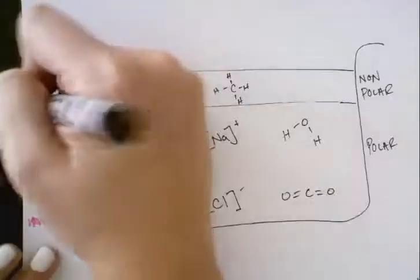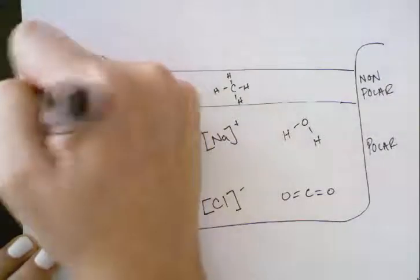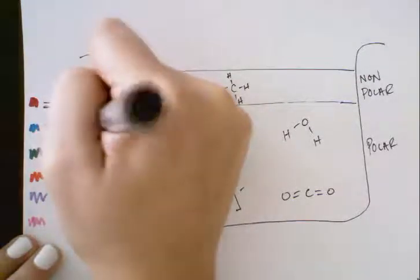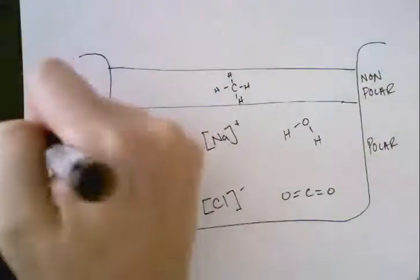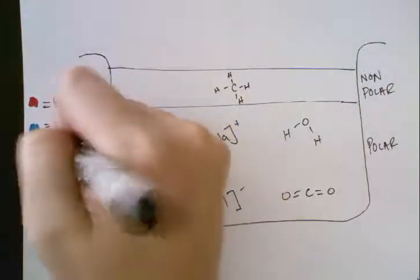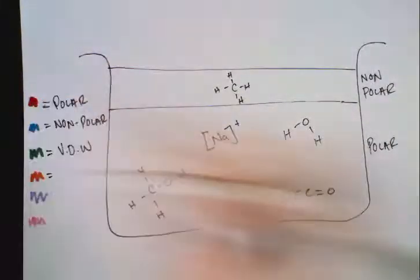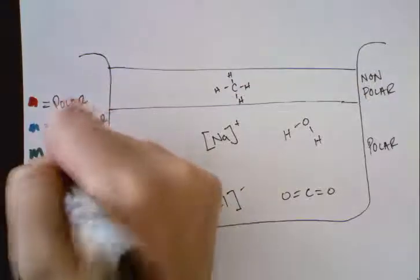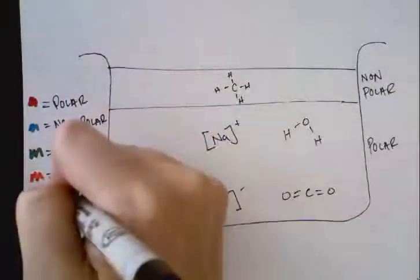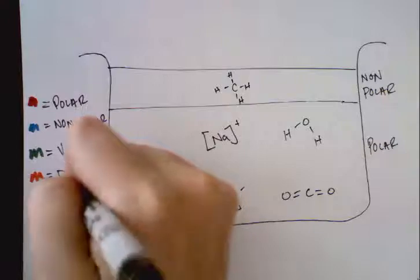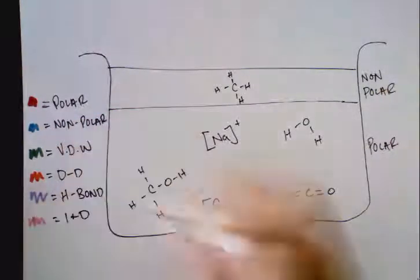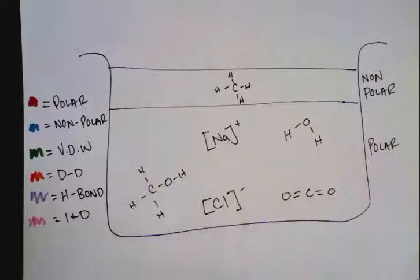So here's my six colors I'm going to use. I'm going to say red is my polar bonds. I'm going to say blue is my non-polar. You should write this out in full, but we're going to say green is our van der Waals. I'm going to say orange is my dipole-dipoles. Purple is going to be my hydrogen bonds. And pink's are going to be my ion-dipoles. But you write this out in full. I'm just tight on space.